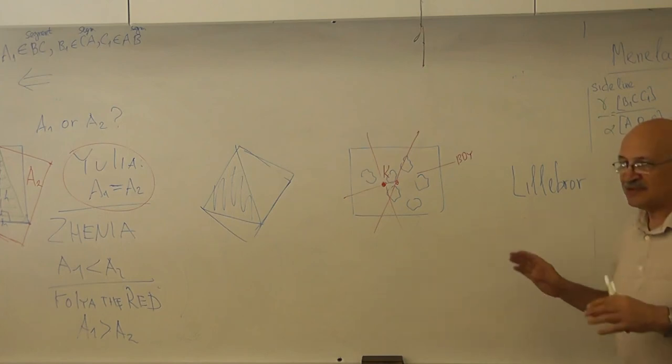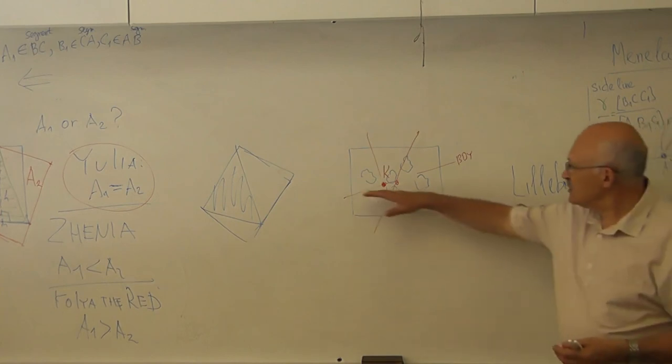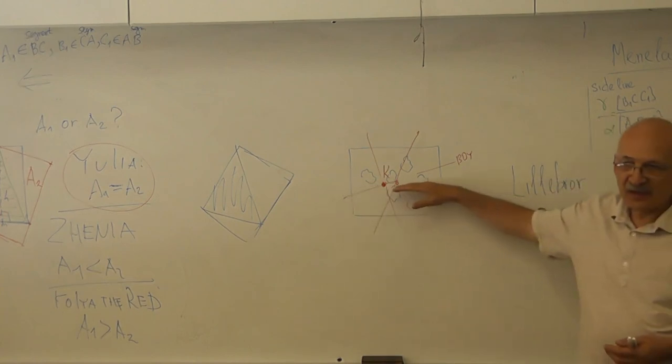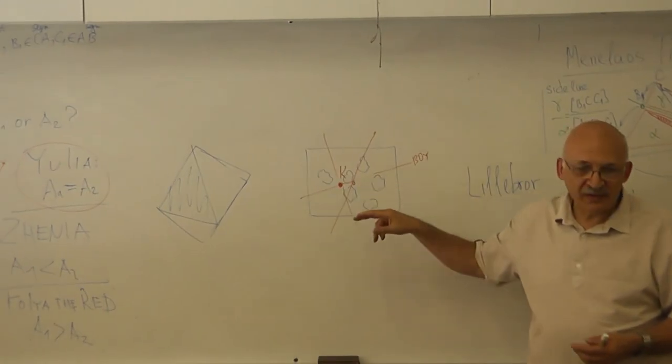So Leverko does suffer. He can get his half anyway. Because he will cut the cake along a straight line through the center. Okay?